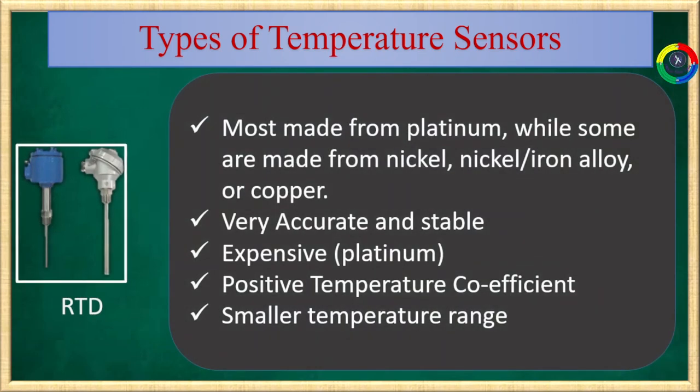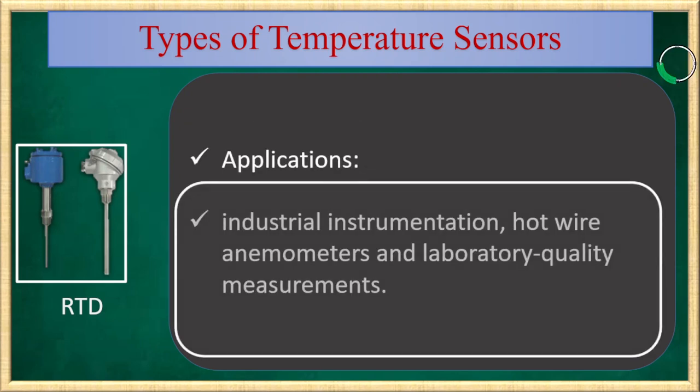RTDs, or resistance temperature detectors, as the name indicates, provide resistance as a function of temperature. Most of them are made from platinum, while some of them are made from nickel, nickel iron alloy, or even copper. They are used where accurate temperature measurement is needed. They can provide stable temperature measurement for longer period of time. They are expensive. RTDs are positive temperature coefficient sensors, meaning that as the temperature increases, the resistance also increases. But they are limited for smaller range of temperature measurements. Mostly RTDs are applicable in industrial instrumentation. They are used as hot wire anemometers, and they are used to generate laboratory quality measurements.